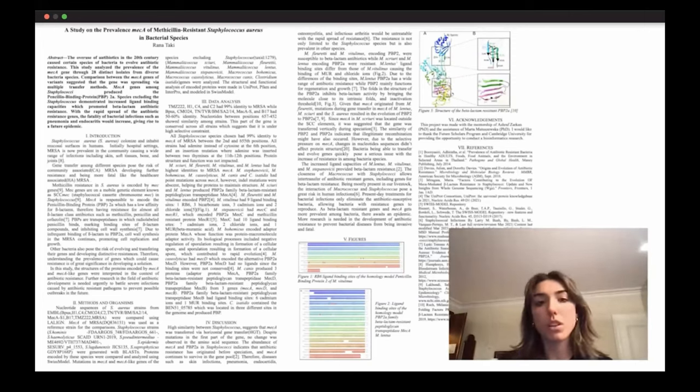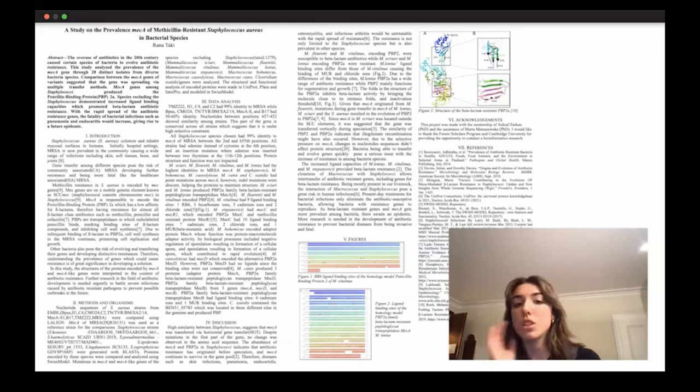Being mostly present in our livestock, the interaction of macrococcus and staphylococcus pose a great risk for human infections. Present-day treatments for bacterial infections only eliminate the antibiotic-susceptible bacteria, allowing bacteria with resistant genes to reproduce. As beta-lactam-resistant genes and mecA gets more prevalent among bacteria, there awaits an epidemic.